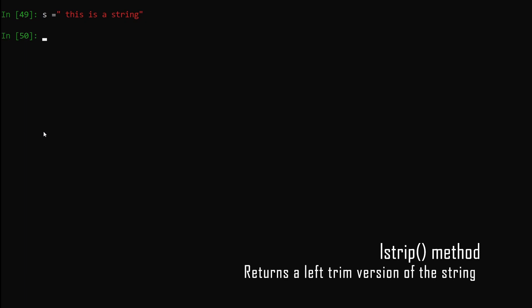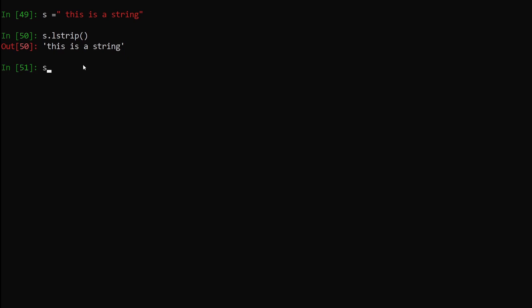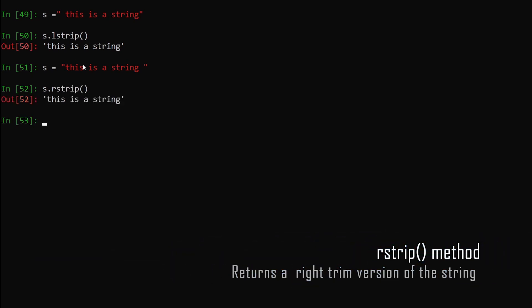Next is lstrip. We already talked about strip, which stripped white space from both the beginning and the end of our string. What lstrip does is strip white space only from the left side. We say s.lstrip(), hit enter — we get the string with no white space at the beginning. Similarly, rstrip removes white space from the right side only. We say s.rstrip(), hit enter — you can see the white space at the end of the string is gone.